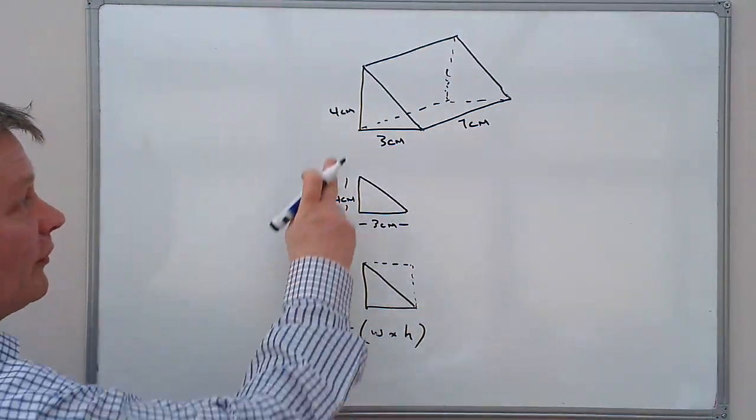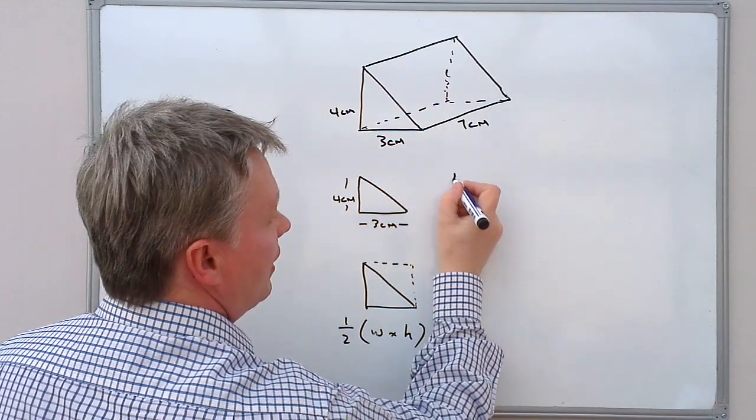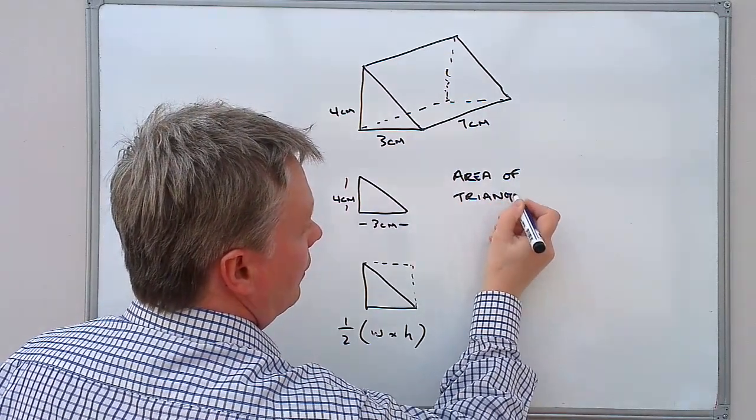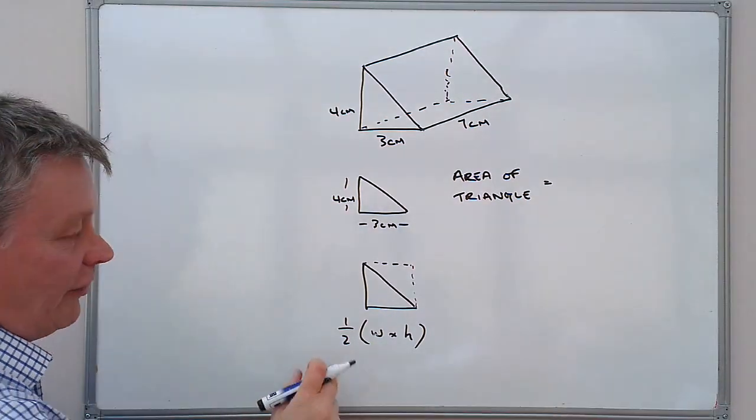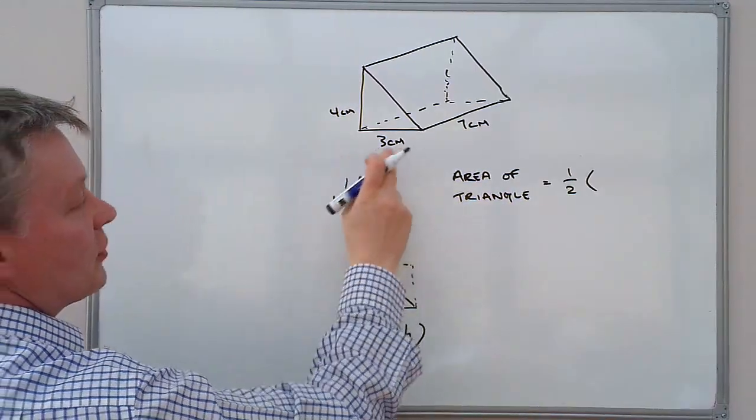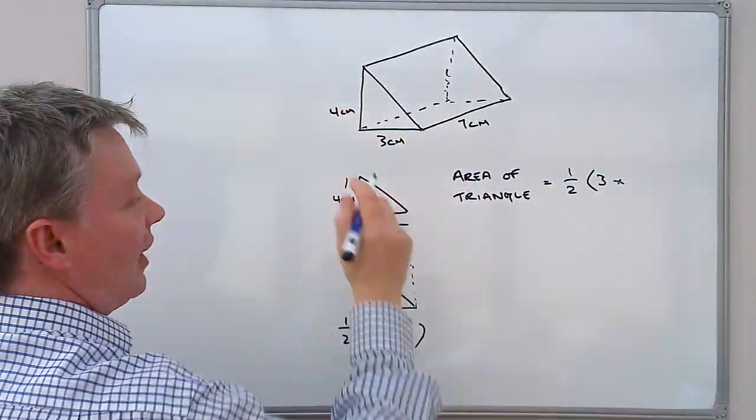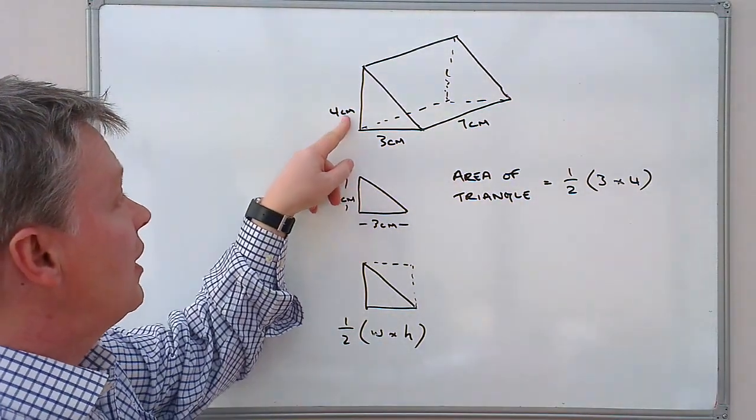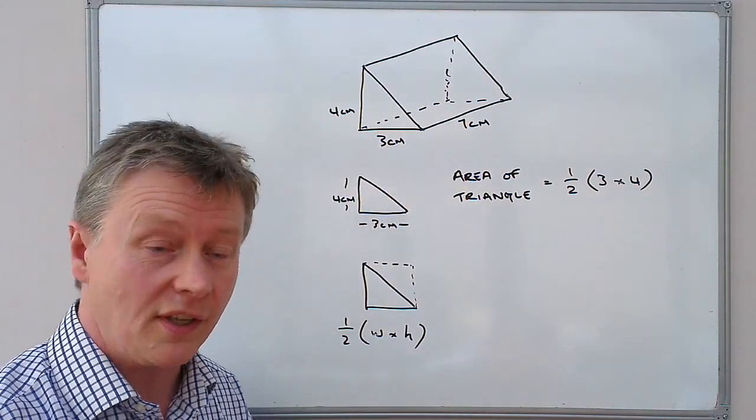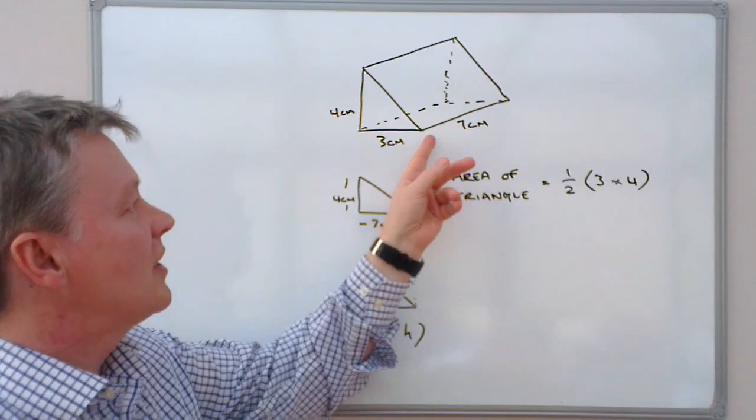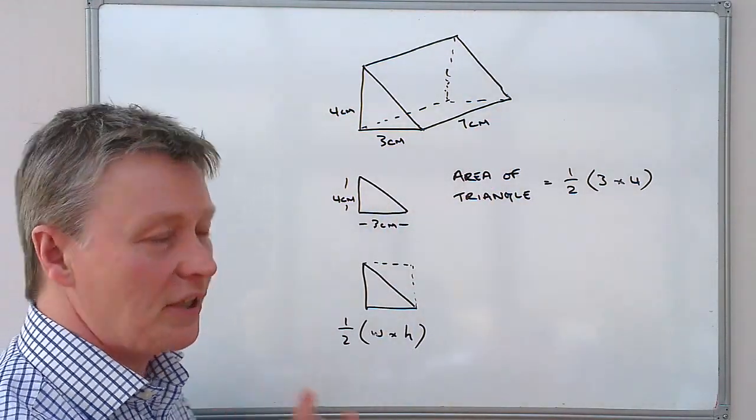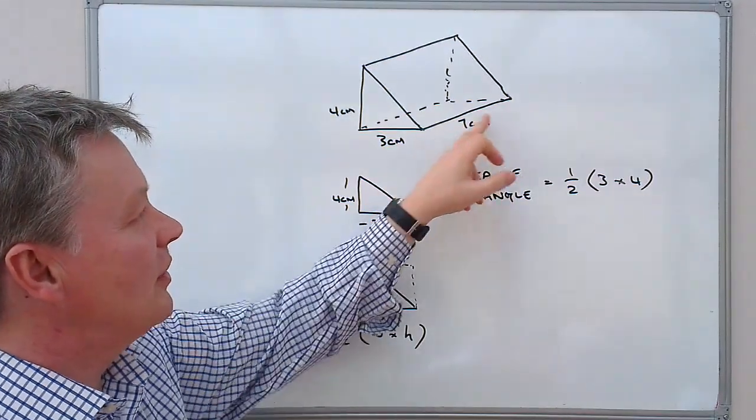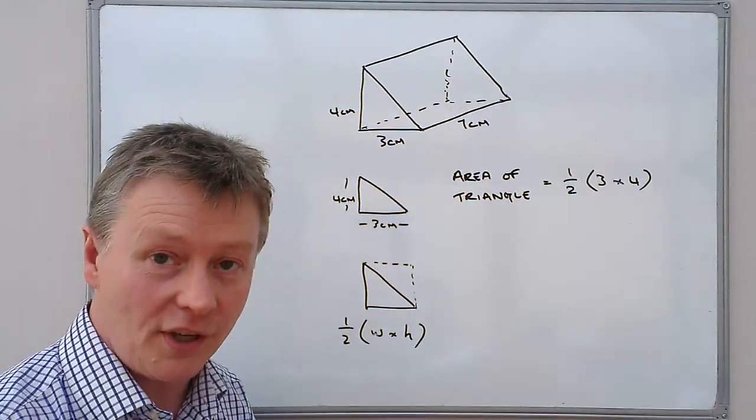So what we've got here is if I just write at the side here, I'm going to put area of triangle. Now just a couple of things while I think about it is that you need to make sure these are all the same units. Occasionally on these questions you might get something like 70 millimetres or 0.7 of a metre or something like that. So sometimes you need to make sure you convert them through to exactly the same unit.